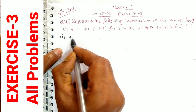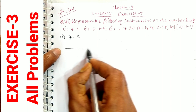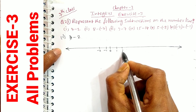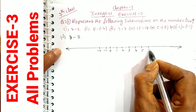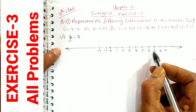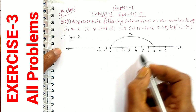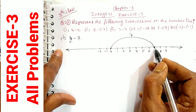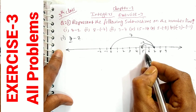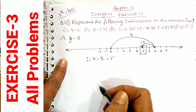First question: 7 minus 2. We will subtract on the number line. The number line has 0 in the center, left side minus 1, minus 2, and so on; right side 1, 2, 3, 4, 5, 6, 7, 8, 9 and so on. We start at 7, then subtract 2, moving 2 steps back. So 7 minus 2 is equal to 5 — that is the answer.